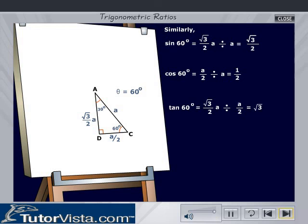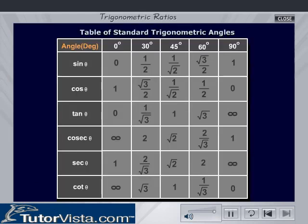The table here shows the values of sin, cos, tan, cosecant, secant, and cotangent for the standard angles of 0°, 30°, 45°, 60°, and 90°.